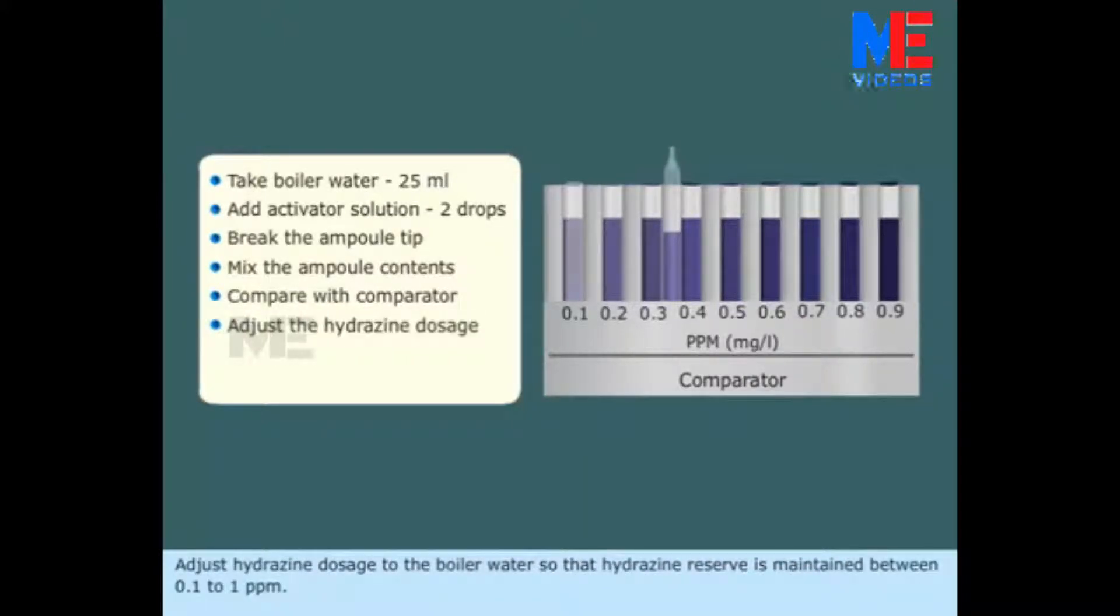Adjust hydrazine dosage to the boiler water so that hydrazine reserve is maintained between 0.1 to 1 parts per million.